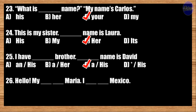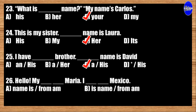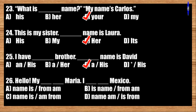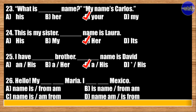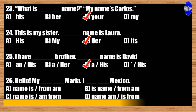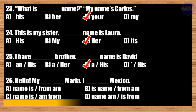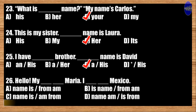Number twenty-six: Hello. My blank Maria. I blank Mexico. A: name is, from am; B: name is, from; C: name is, am from; D: name, is from. The best answer is option C. Hello, my name is Maria. I am from Mexico.